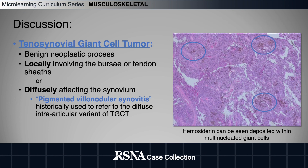Previously, tenosynovial giant cell tumor was thought of as a hypertrophic phenomenon. However, more recent molecular analyses in fact point more toward a benign neoplastic origin. Lesions may be seen confined locally to bursa or tendon sheaths, or may affect the synovium more diffusely.